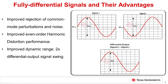Even order harmonic distortion enjoys similar benefits to the common mode cancellation discussed previously. Hence, differential signaling tends to have improved THD performance compared to its single-ended counterparts. Yet another advantage of differential signaling is the increased dynamic range. As shown here, while each single-ended signal has a 2-volt peak-to-peak swing, the differential output swings by 4 volts peak-to-peak, thereby doubling the signal swing.